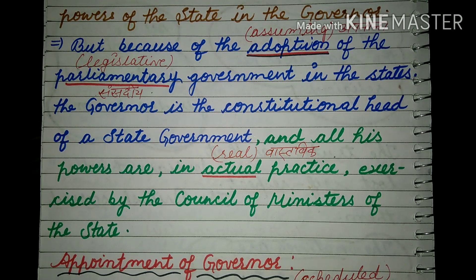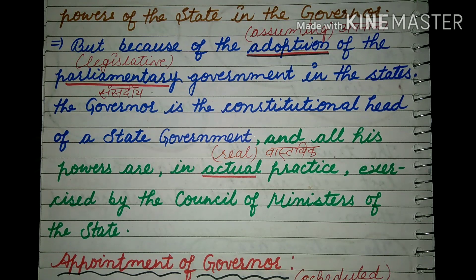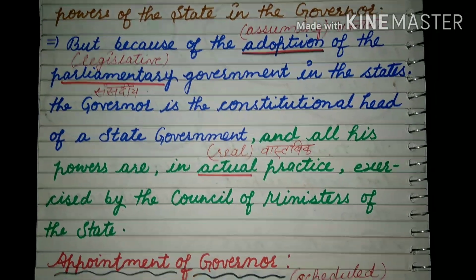Exercised by — कि उसकी जितनी भी power है, वो जो भी executing advice लेता है, suggestion देता है — वो council of ministers के द्वारा देता है. राज्य की जो संसदीय मंत्री परिषद है, उनके द्वारा ही वो अपने निर्णय लेता है. Now let us see the appointment of Governor — Governor को कैसे appoint किया जाता है.